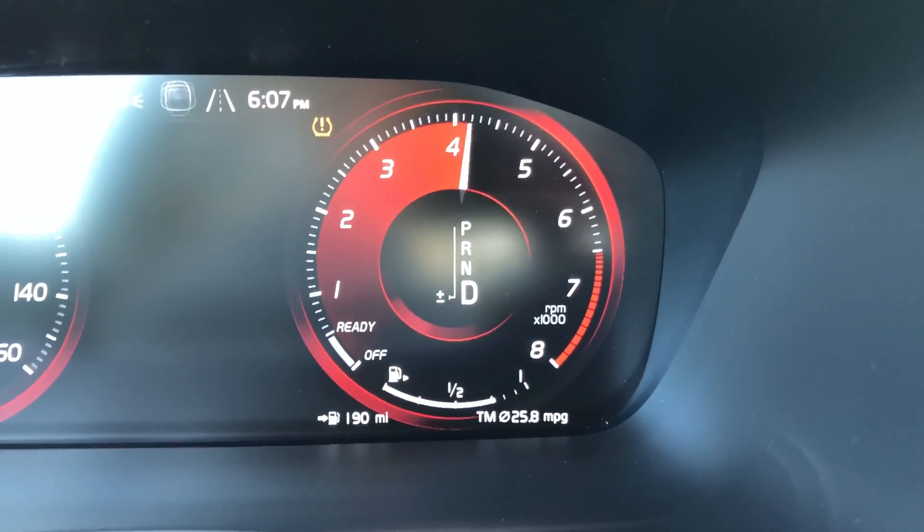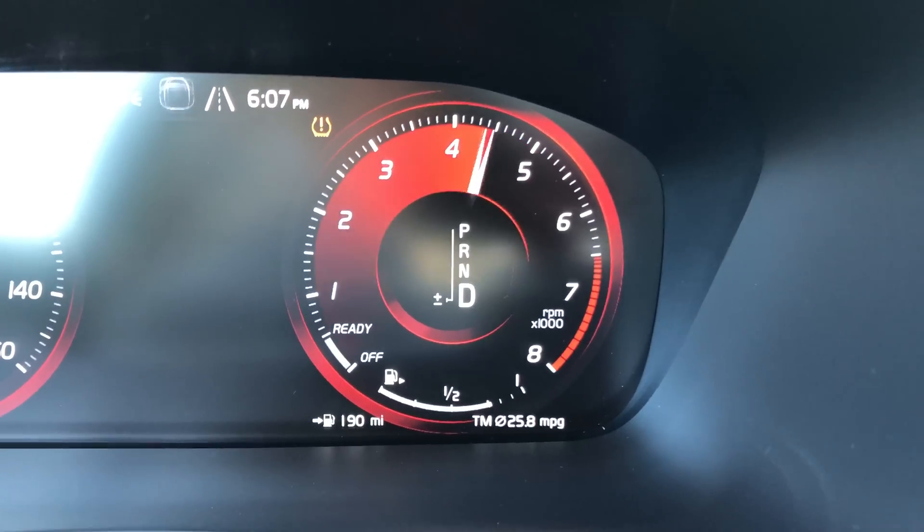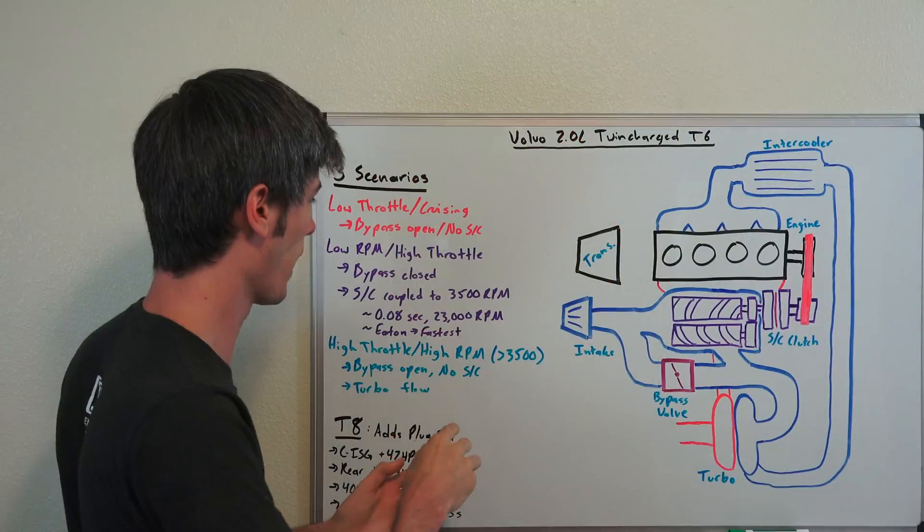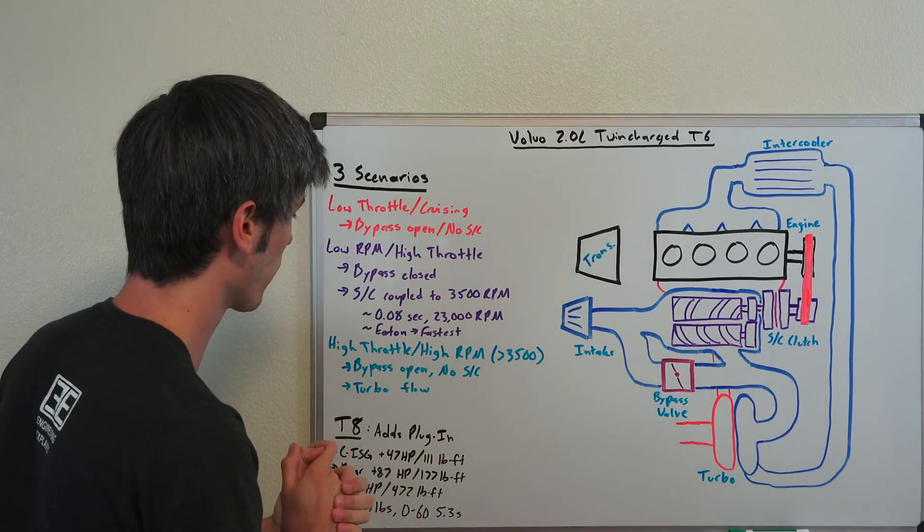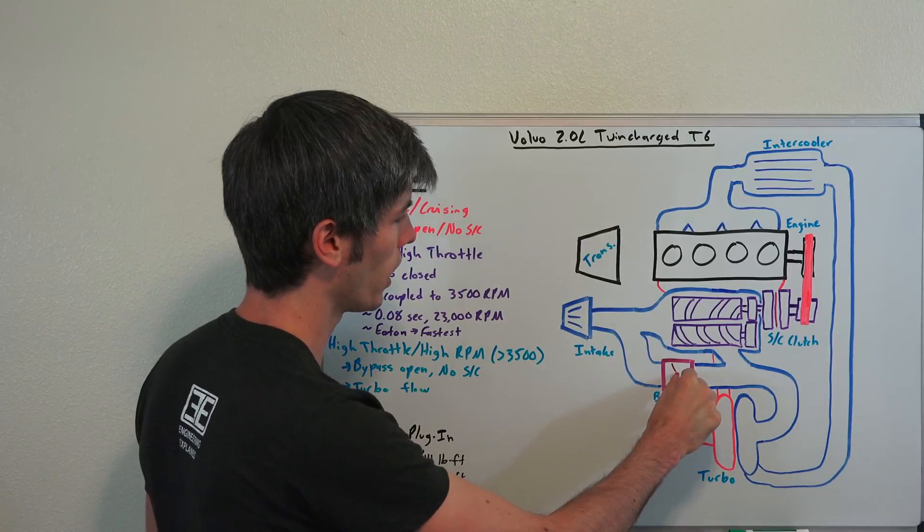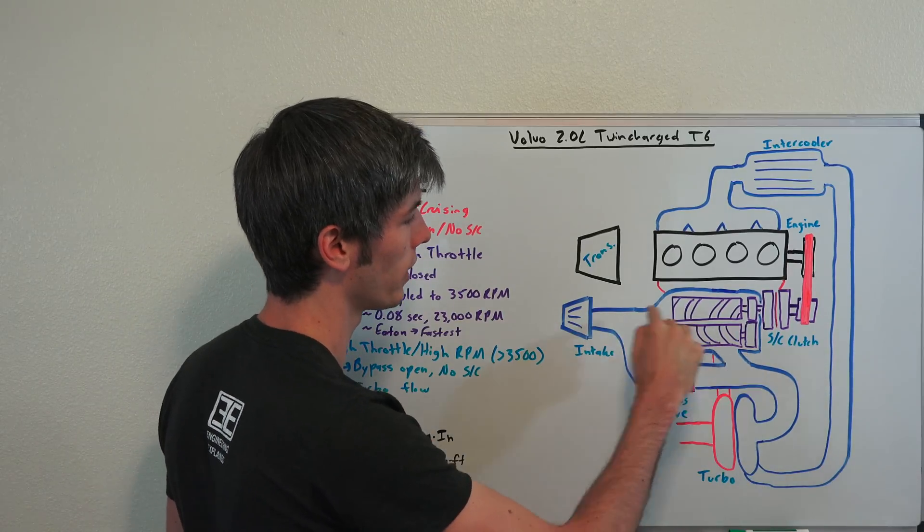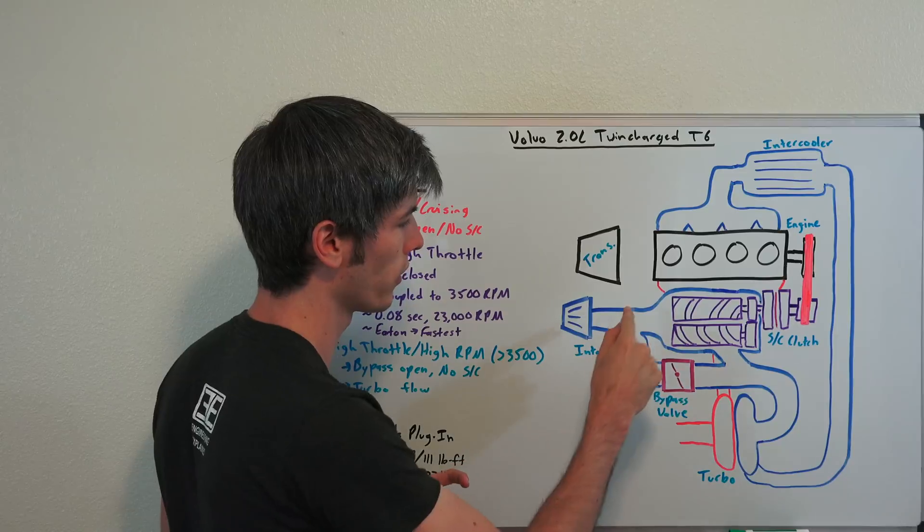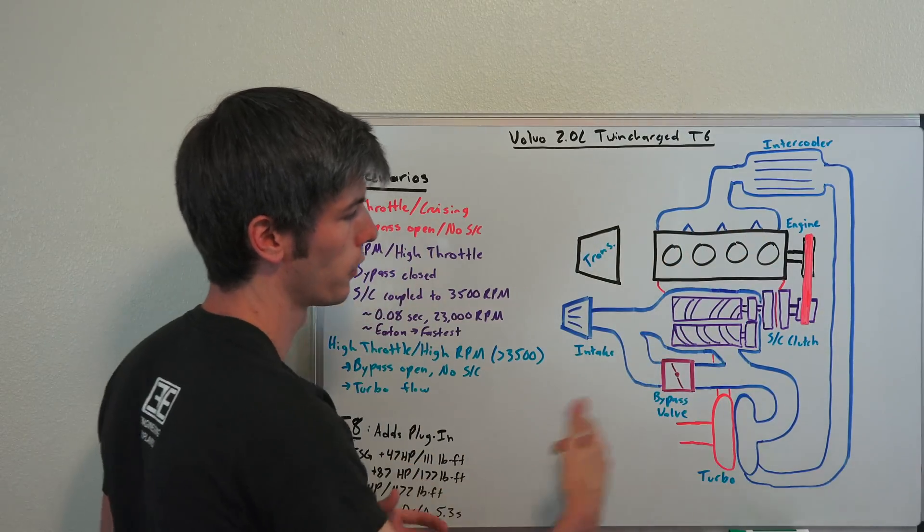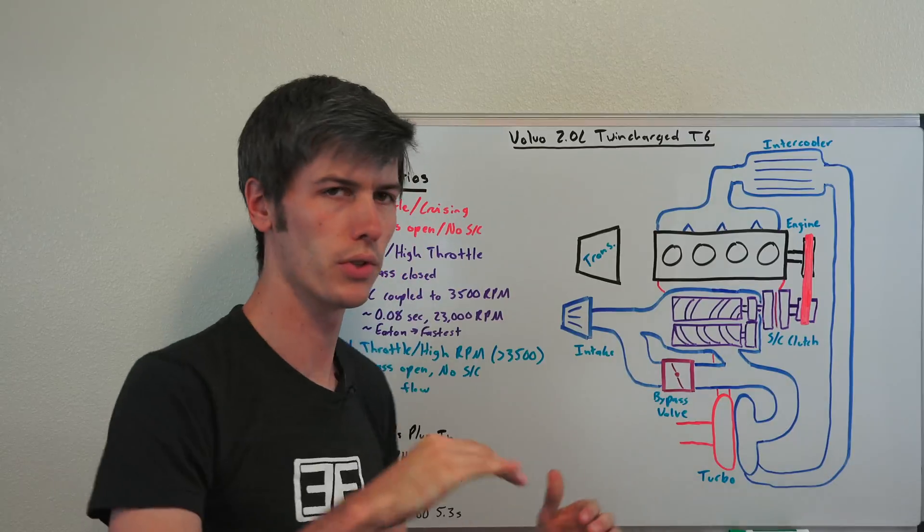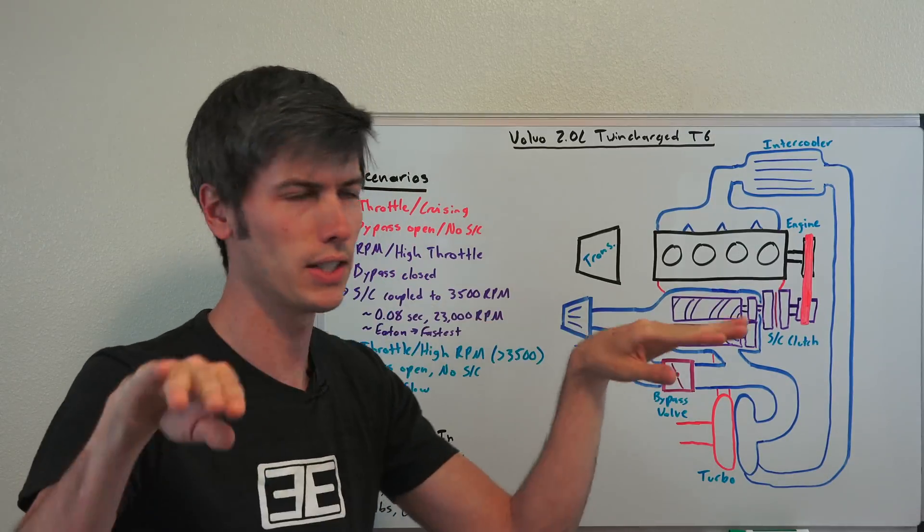Now, what happens once you've reached 3,500 RPM? Well, at this point, if you're still fully on the throttle and you've reached 3,500 RPM, that supercharger clutch disengages. And so now this bypass valve is going to open. You're no longer going to be sending airflow through the supercharger. Instead, you now have sufficient exhaust gases, which have built up, and they're fully spooling up this turbocharger. So it's a smooth transition in boost. There's not a dip in boost.